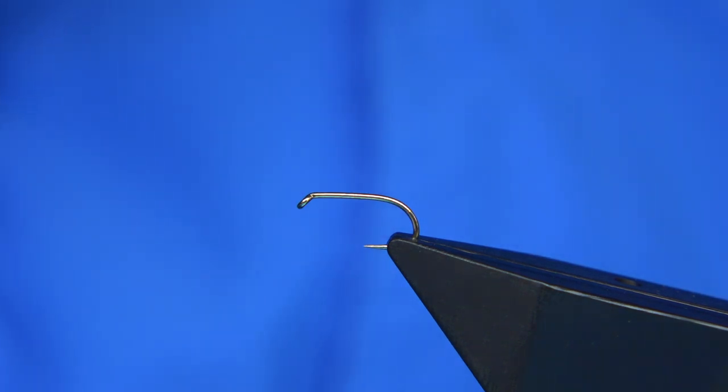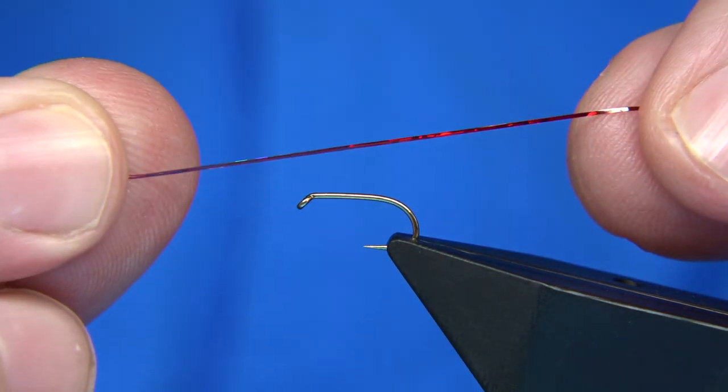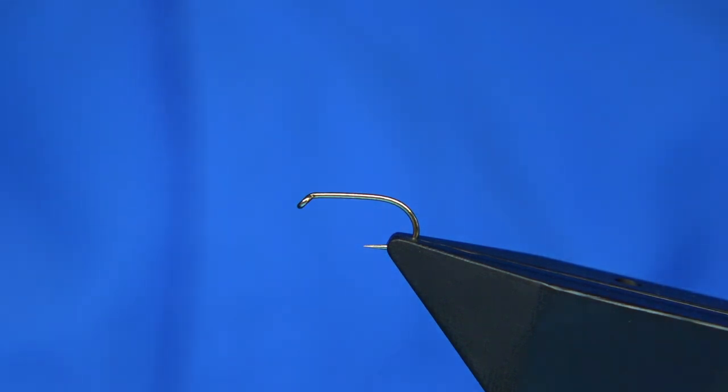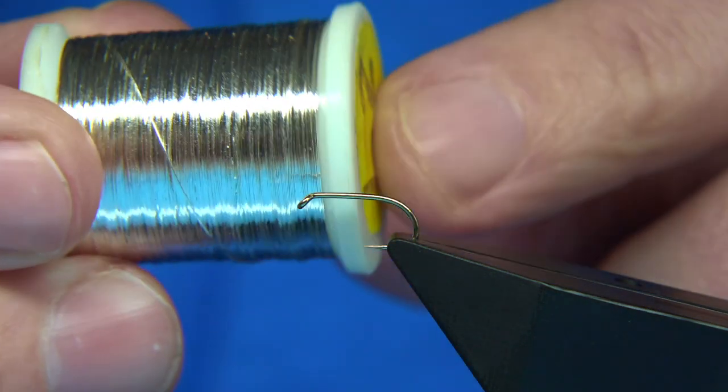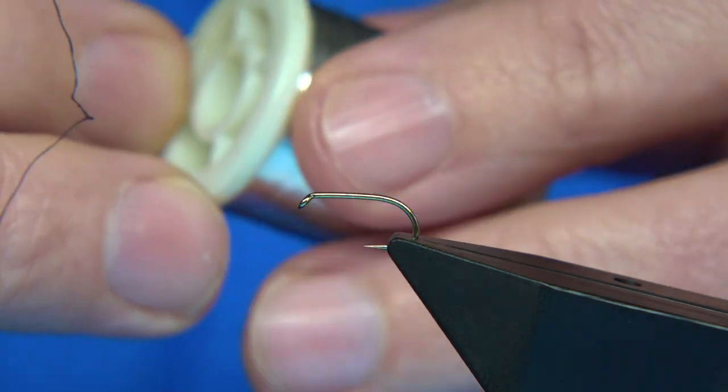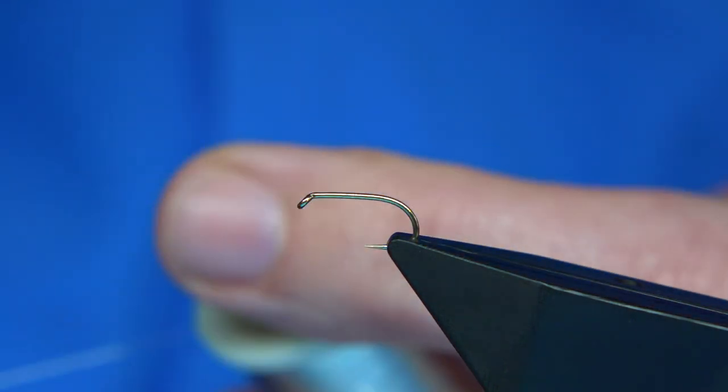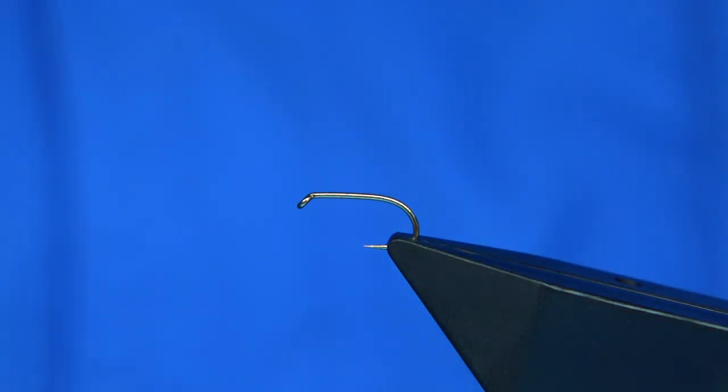There's two ribs in the fly. We've got a fine holographic, a small red holographic on this fly. And I'm using this, Veniard's silver wire number 27, which is a small wire, so it's quite thin. It's not too heavy, makes it easier to tie.